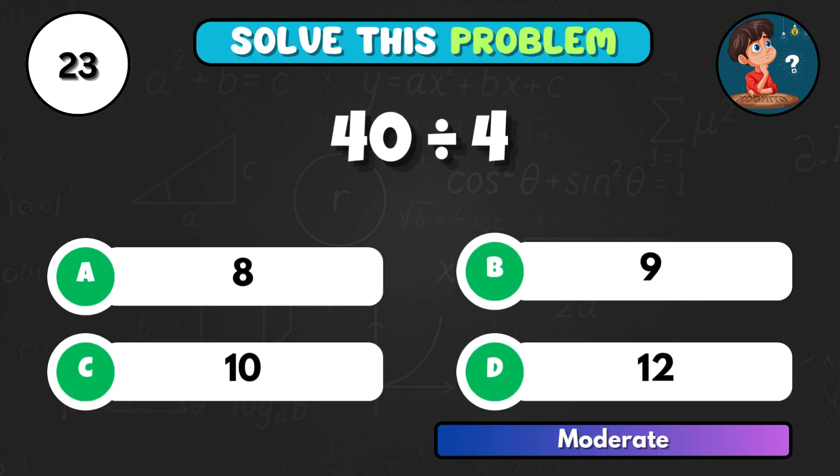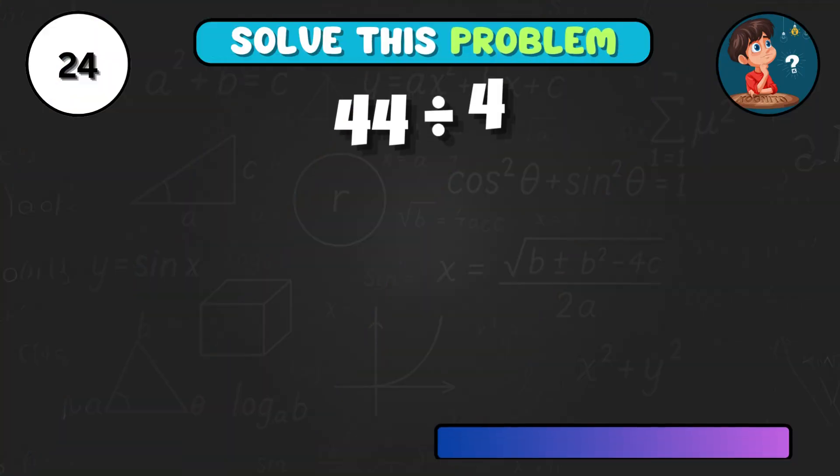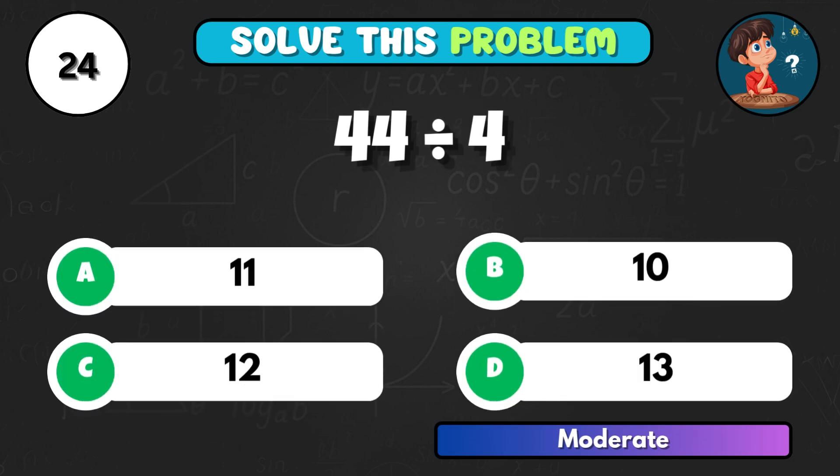40 divided by 4, what's the result? Correct choice C equals 10. How about 44 divided by 4? That's A, giving 11.